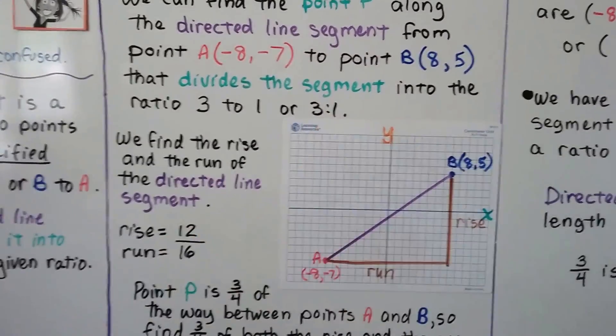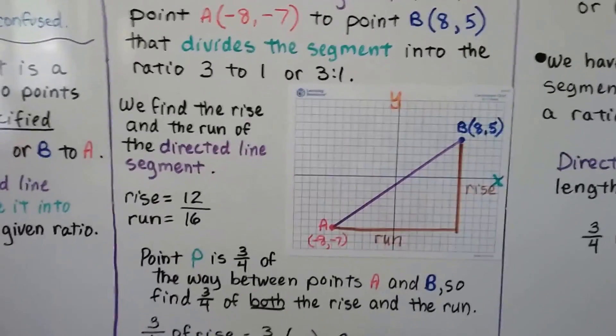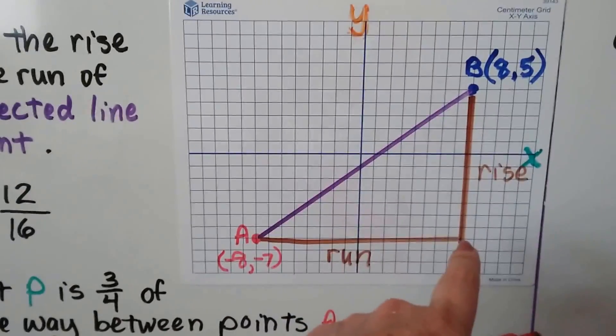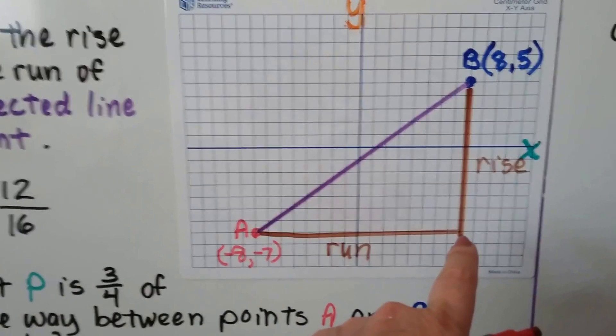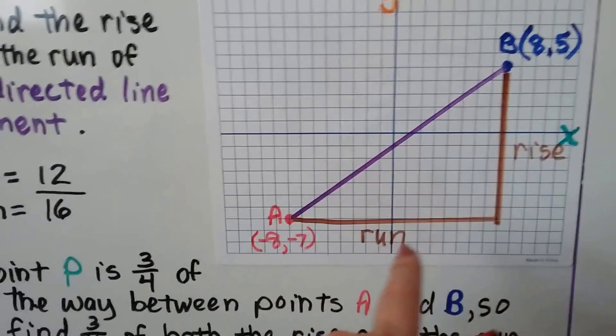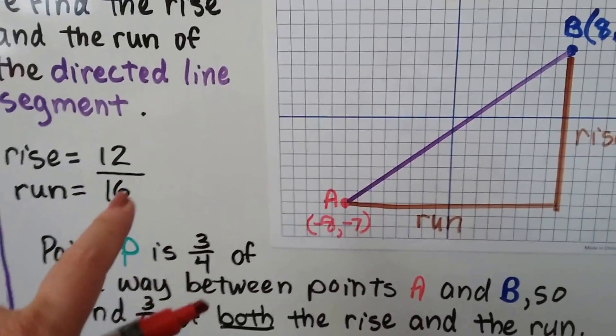We find the rise and the run of the directed line segment, and it's where the horizontal run meets the vertical rise. We count, there's 12 boxes here, and there's 16 here, so the rise is 12 and the run is 16.